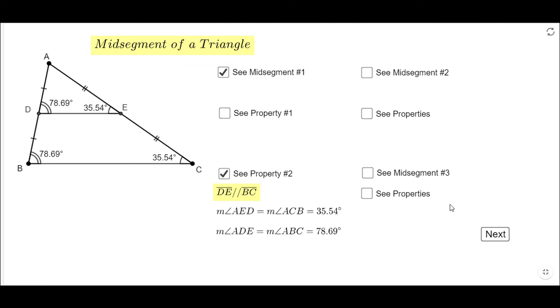And you notice here the measure of angle ADE and measure of angle ACB is around 35 degrees. Those are corresponding angles. And the same, the other pair: measure of angle AED equals the measure of angle ABC, around 78 degrees. That tells us DE is parallel to BC.